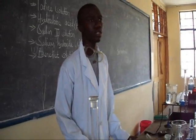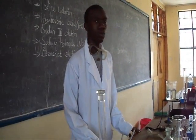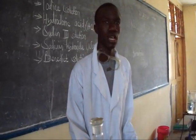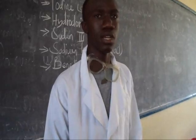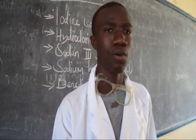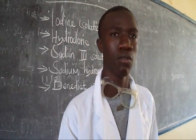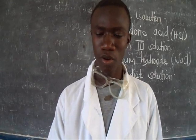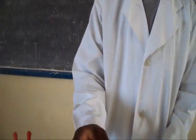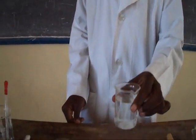Today we are going to start the experiment about the food test, beginning with starch. When food contains starch, the colour will change to dark blue. Whenever the food does not have starch, it will retain the colour of the iodine solution. For example, we have food sample T which contains starch, and food sample H which does not contain starch.